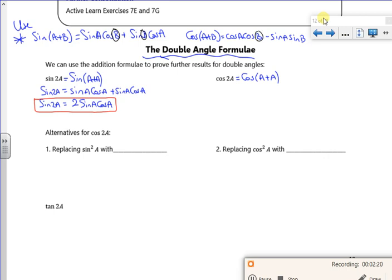So once again, if I change the b into a, I've got cos a cos a minus sin a. So cos 2a is cos squared of a minus sin squared of a. And that also is quite important.